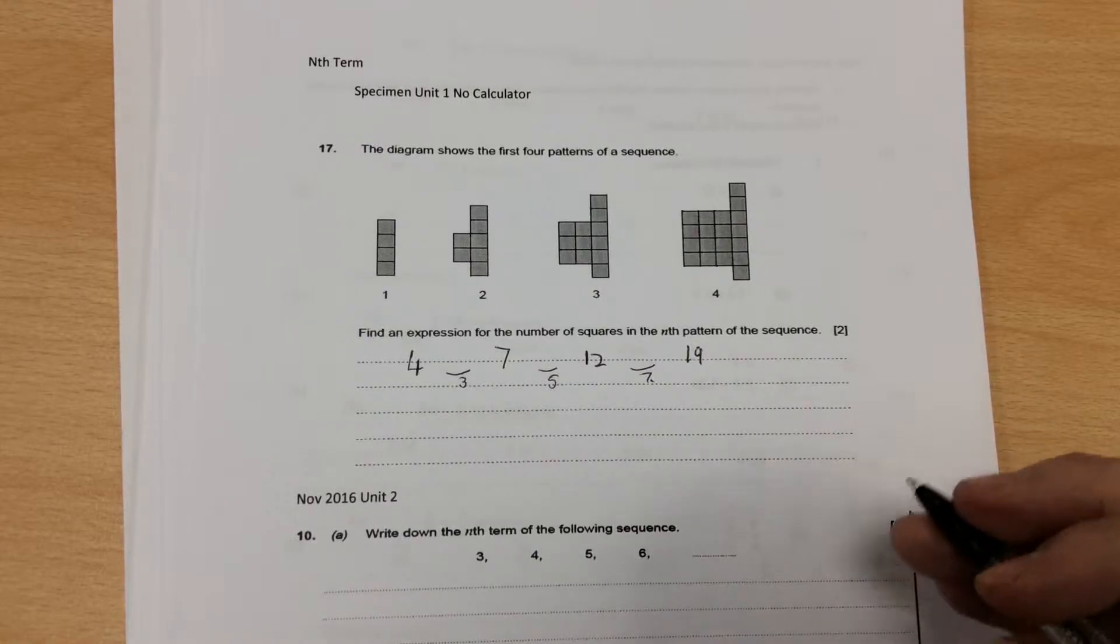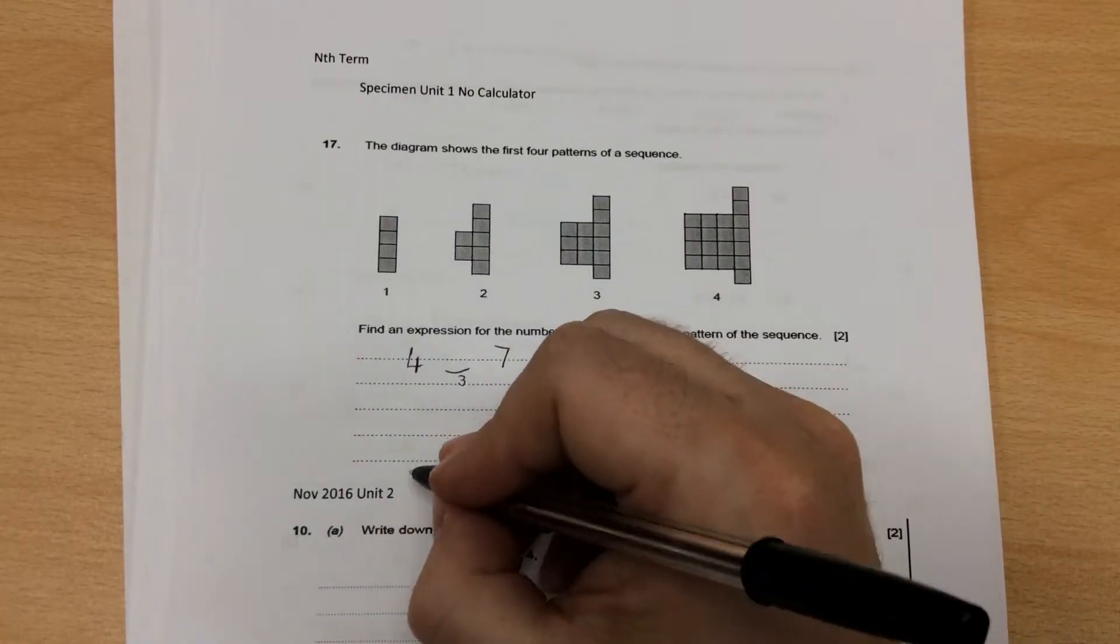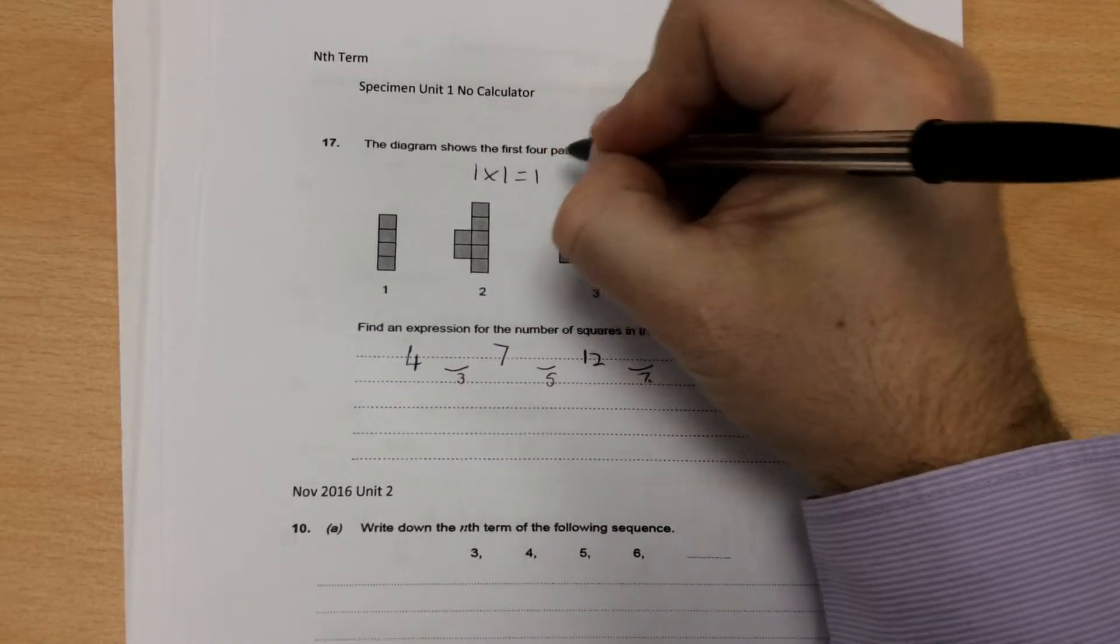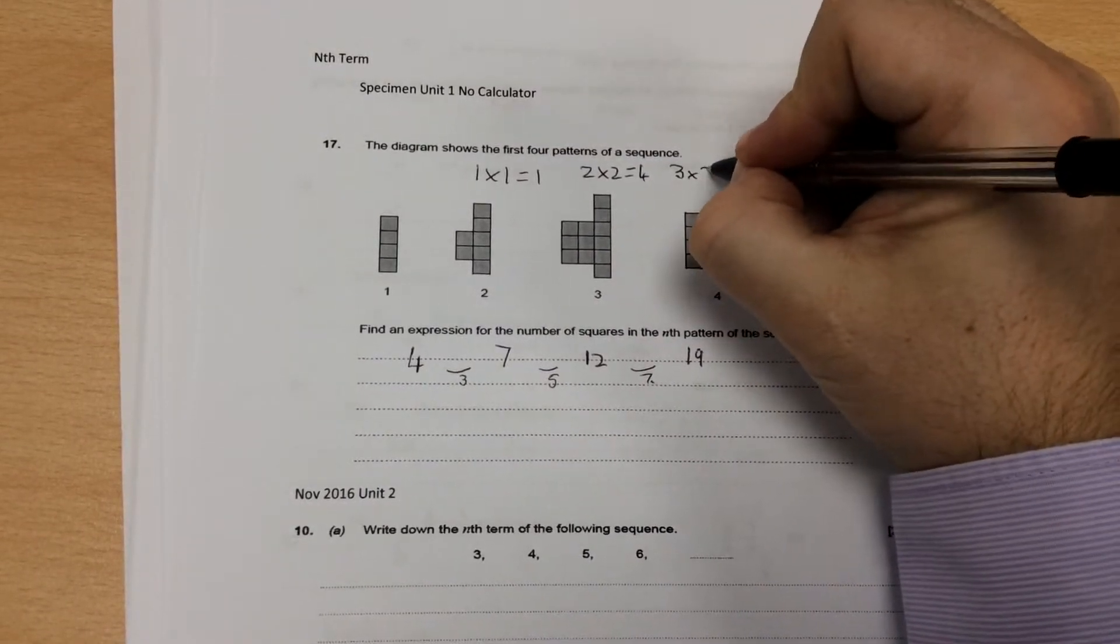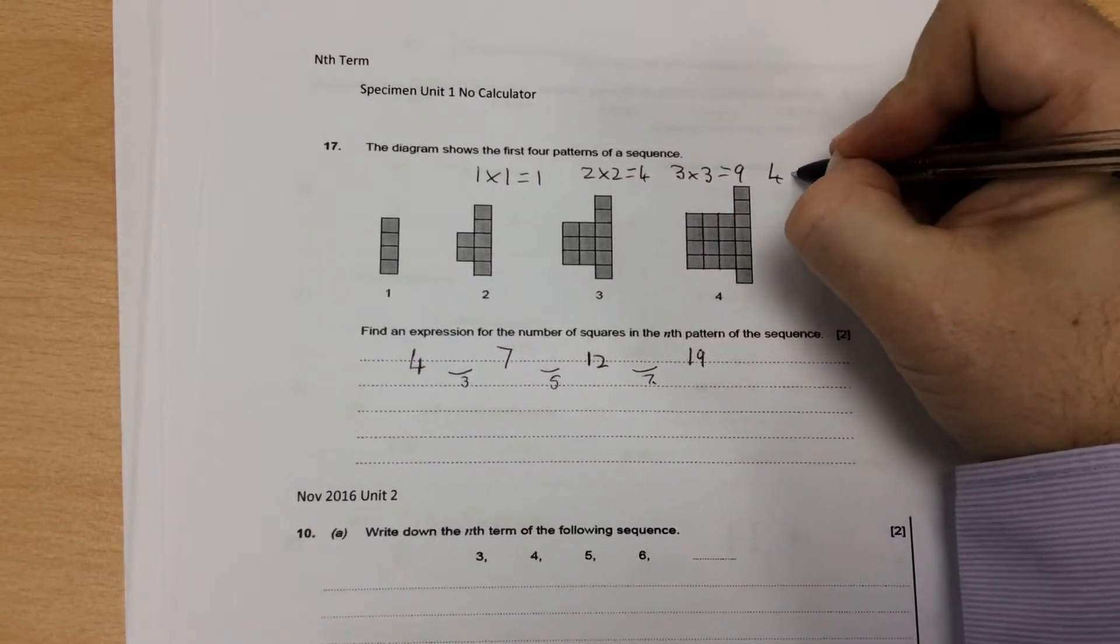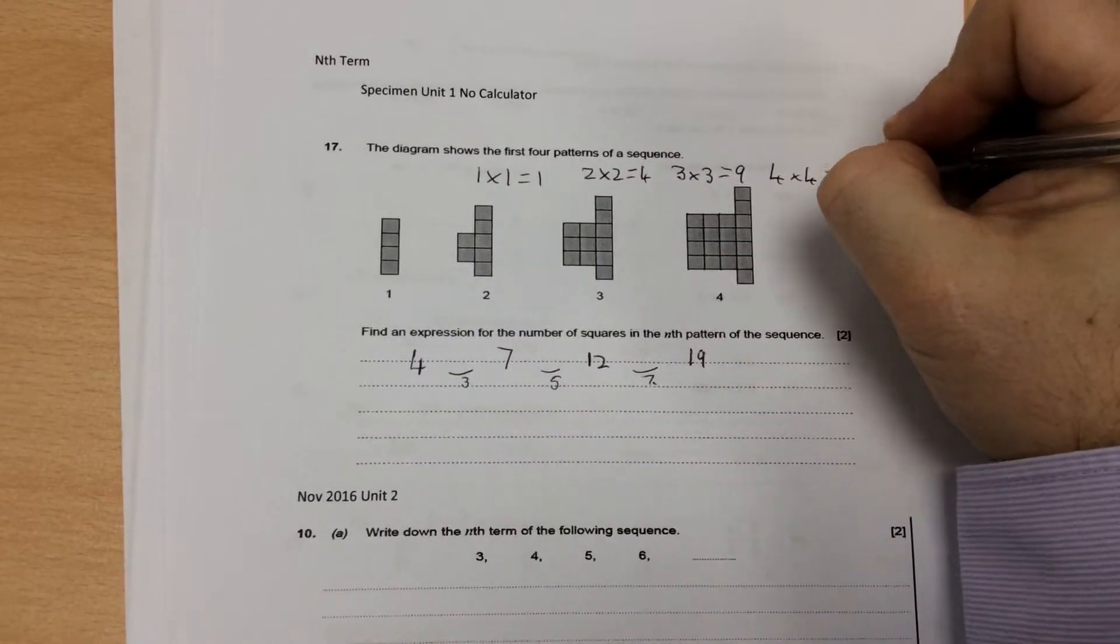A lot of these ones, it's always worth knowing that one times one is one. Square numbers, two times two is four. Three times three is nine. Four times four is sixteen.